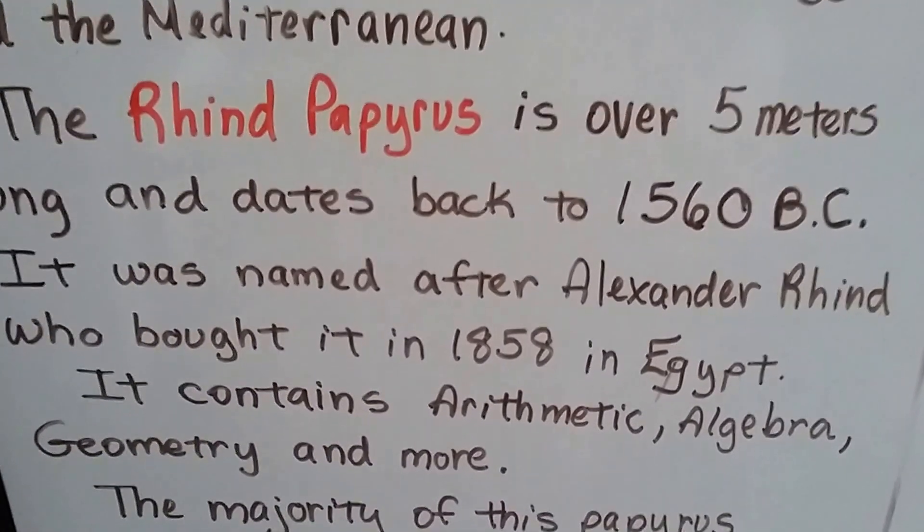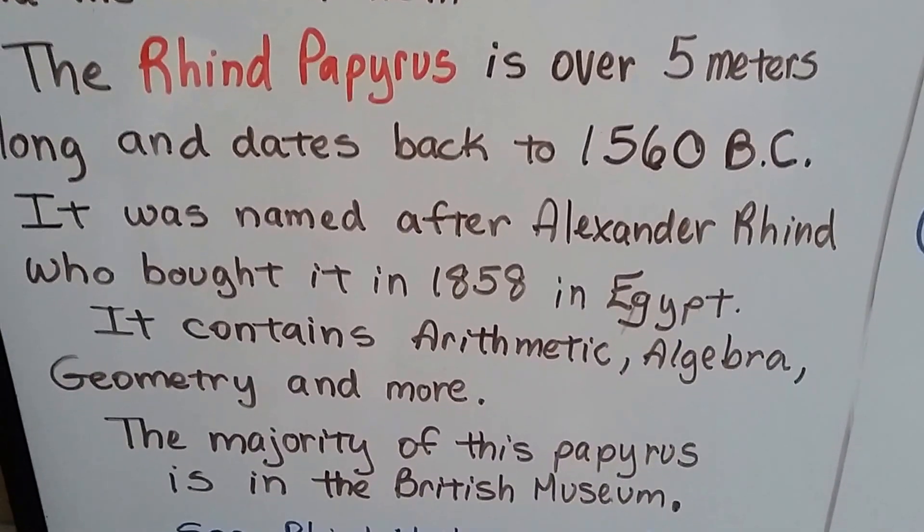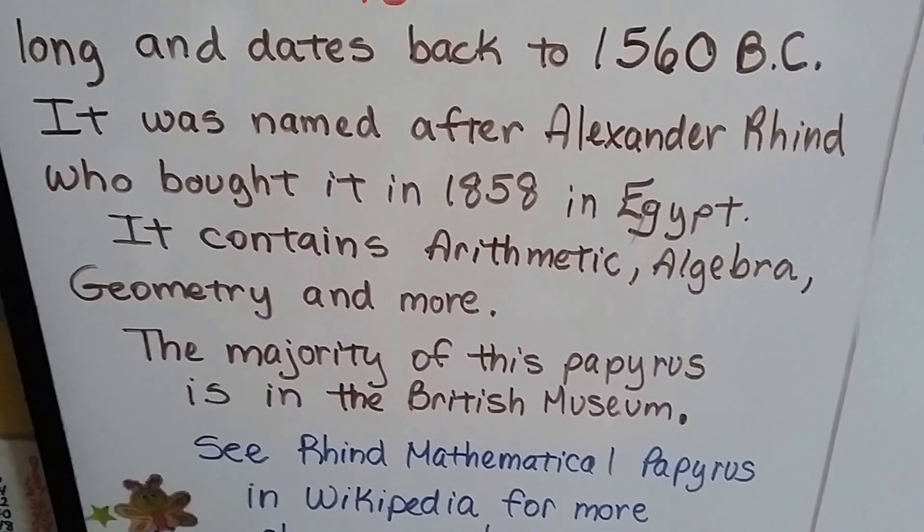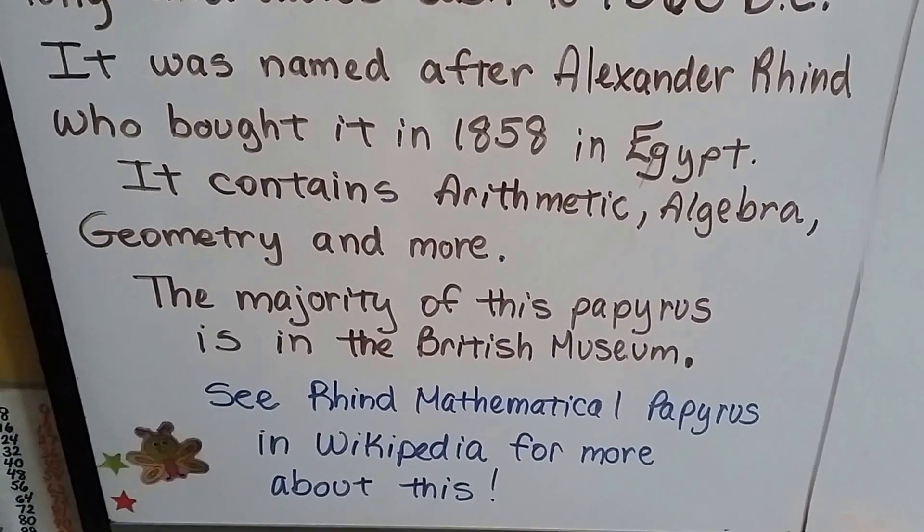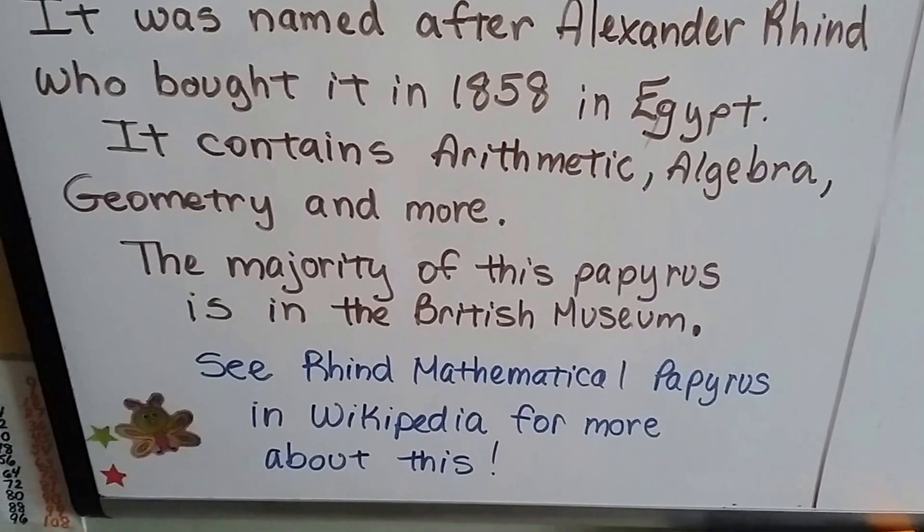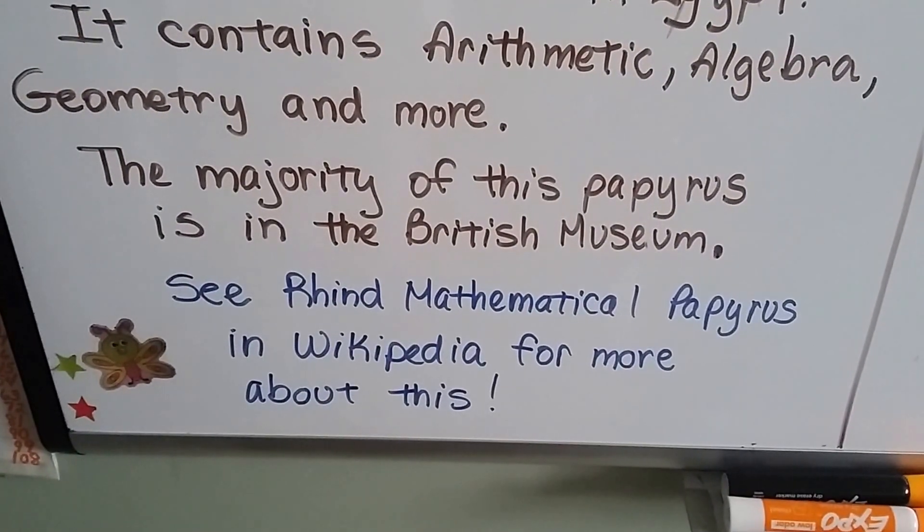The Rhind Papyrus is over 5 meters long and dates back to 1560 BC. That's 1,560 years before Christ. It was named after Alexander Rhind, who bought it in 1858 in Egypt. And it contains arithmetic, algebra, geometry, and other stuff. The majority of this papyrus is in the British Museum.